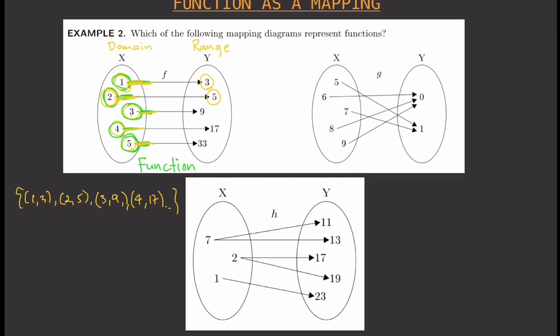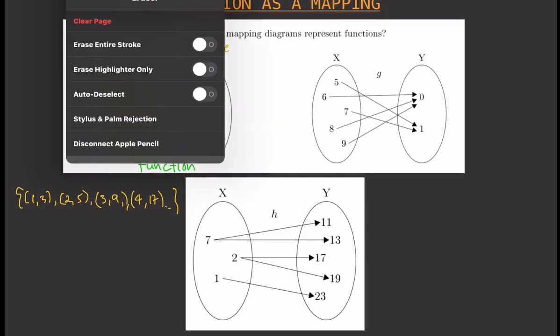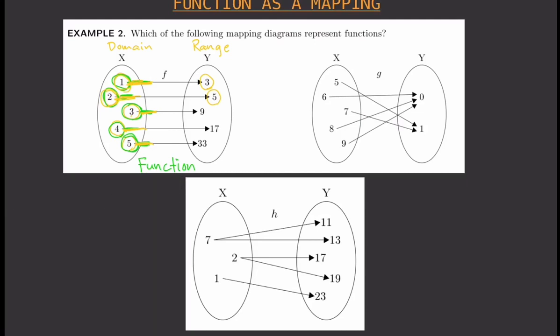Now let's look at the second example. If you look at the numbers in the domain, each one has only one line connected to it — one, one, one, one, one — so therefore this is also a function.